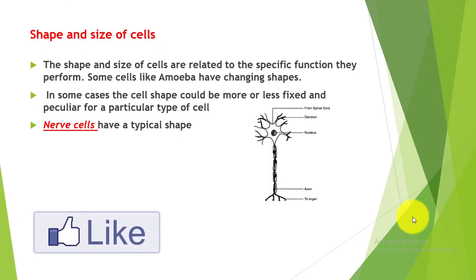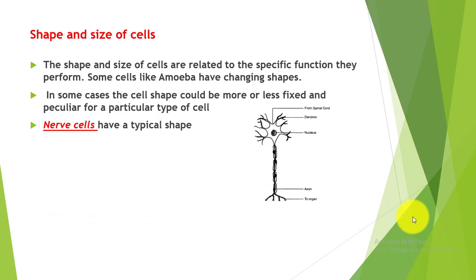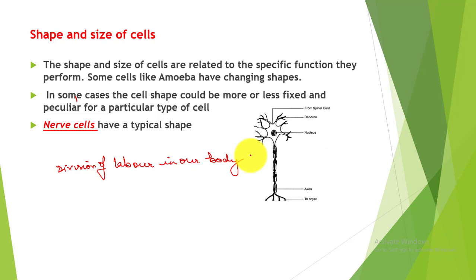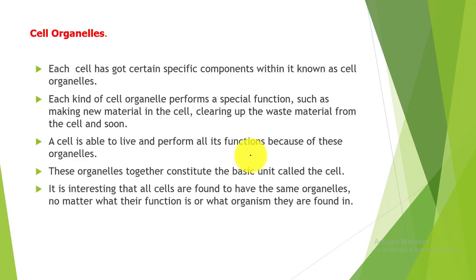The shape and size of cells are related to the specific function they perform. Now, division of labour exists in multicellular organisms. In human beings, different body parts perform different functions: hand movements, leg movements, eye movements externally, and internally the heart pumps blood and the stomach performs digestion. This division of labour also exists within a single cell. Just as Robert Hooke saw compartments, internally within the cell there is also division of labour, carried out by cell organelles.